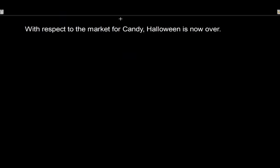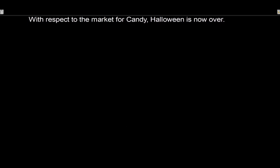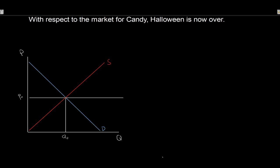Next example: with respect to the market for candy, Halloween is now over. This is a trickier one because it's not really mentioning supply or demand explicitly - you really have to think about what's happening. A lot of people think: Halloween's over, we don't need to produce as much candy anymore, so quantity supplied fell. I'm not going to argue with that, but that's not the correct rationale. Going back to our determinants and producer theory, why would quantity supplied fall? That's not the shock that's being impacted here.